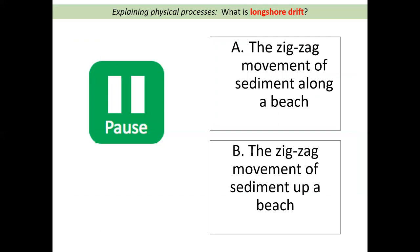Now read these two descriptions and point at the screen — which one is longshore drift? Is it A: the zigzag movement of sediment along a beach? Or B: the zigzag movement of sediment up a beach? The correct answer is A — the zigzag movement of sediment along a beach. If you got that right, let's continue. If not, please go back and check your understanding.